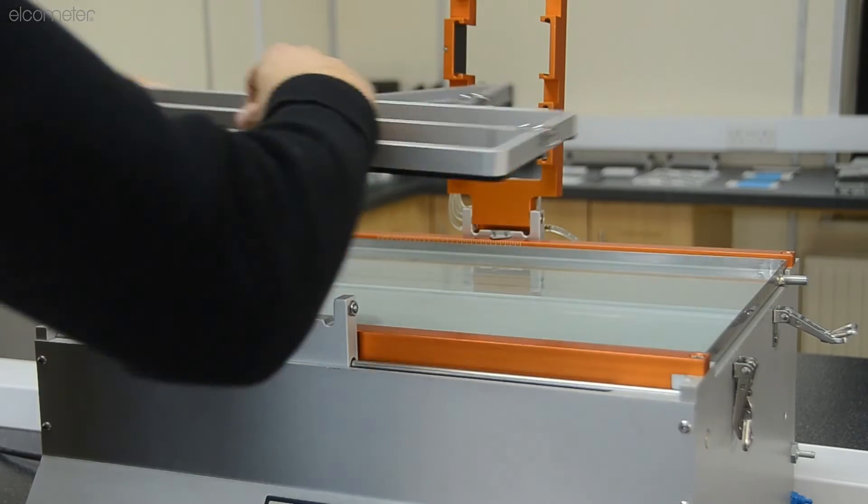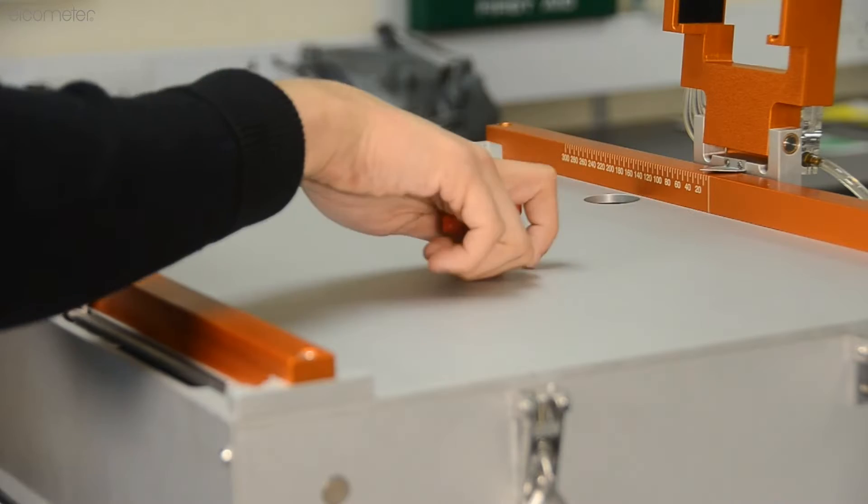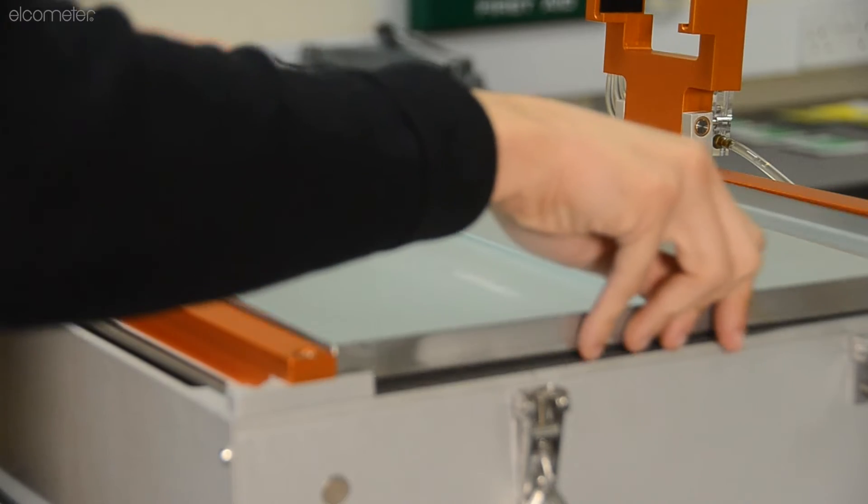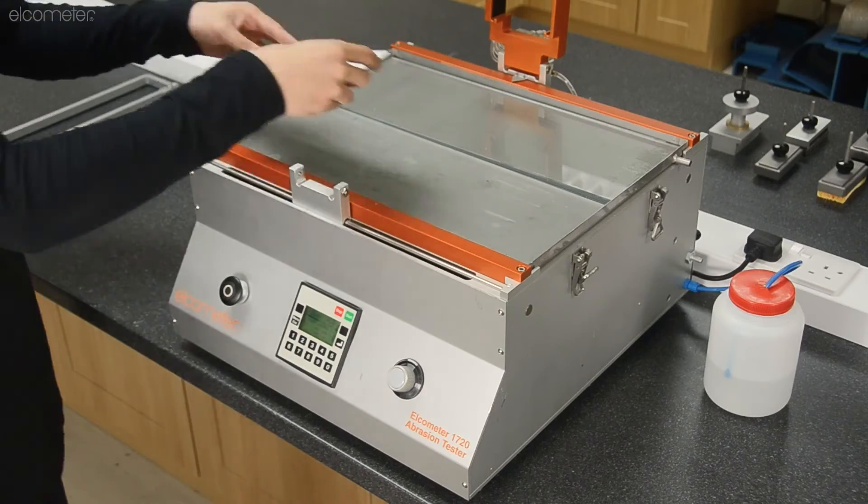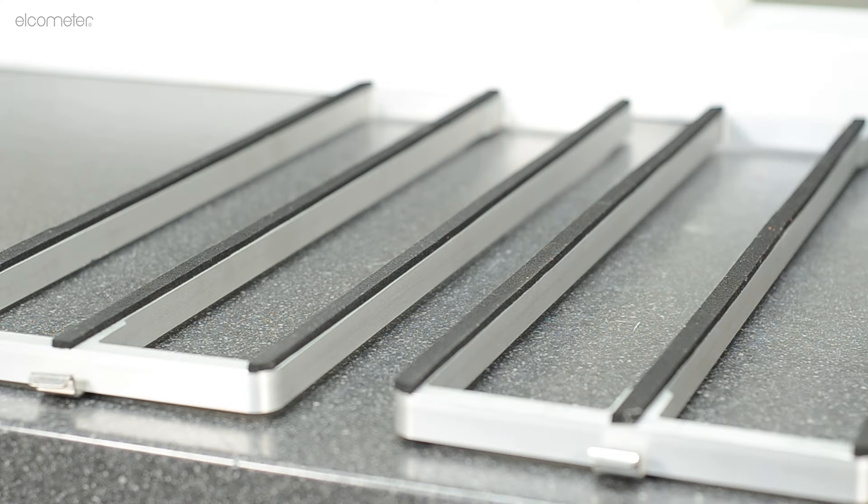To conduct a washability test using the Elcometer 1720, simply lift up the carriage to remove the tray. Then, use the provided tools to adjust the stroke length to your desired length. Place the tray back onto the tester and insert the materials being tested into the tray. Secure them tightly with the provided gasket frames.